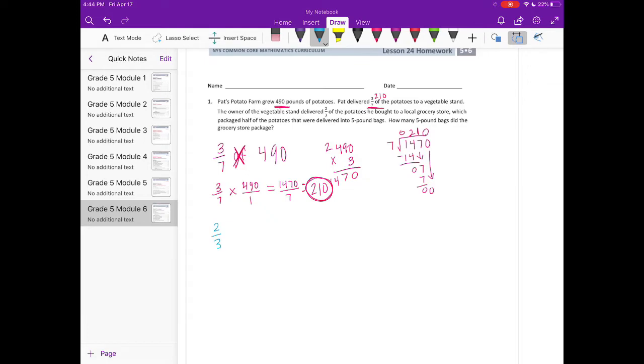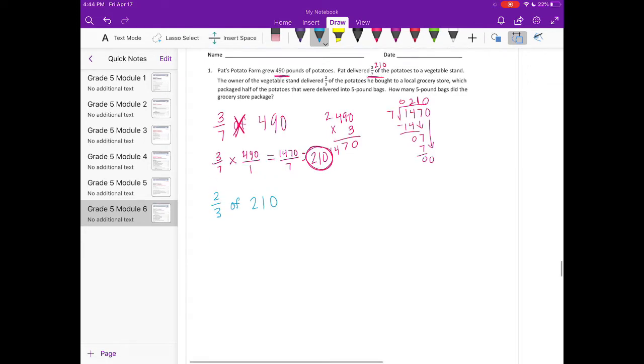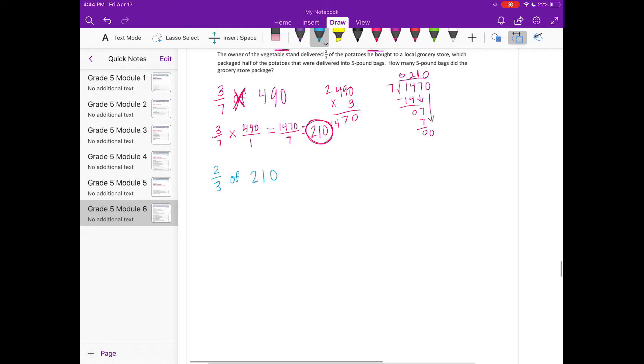So two-thirds of 210. Let's do the same thing. Remember, 'of' means times, so two-thirds times 210. 210 times 2 is 420, so we get 420 thirds. Now let's divide.